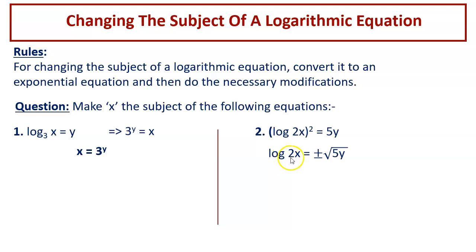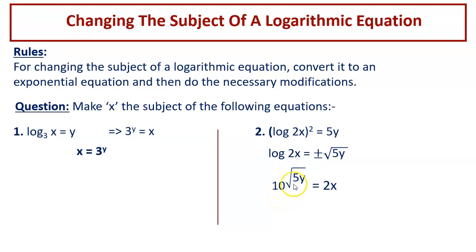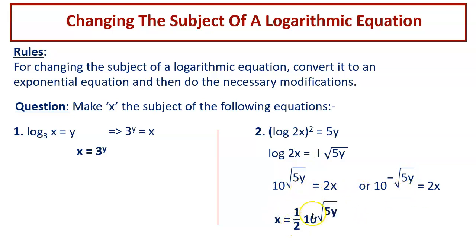With base 10, argument 2x, and the power being either positive or negative square root of 5y, we get two exponential equations: 10 raised to the power of square root of 5y equals 2x, or 10 raised to the power of negative square root of 5y equals 2x. Dividing by 2: x equals half times 10 raised to the power of square root of 5y, or x equals half times 10 raised to the power of negative square root of 5y.